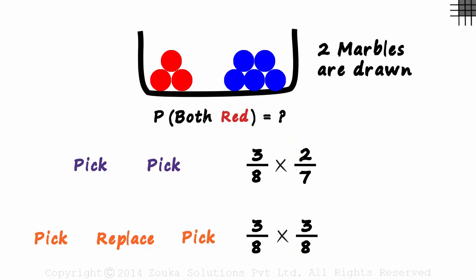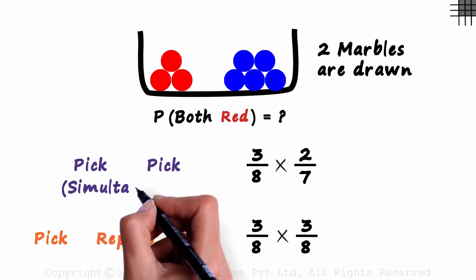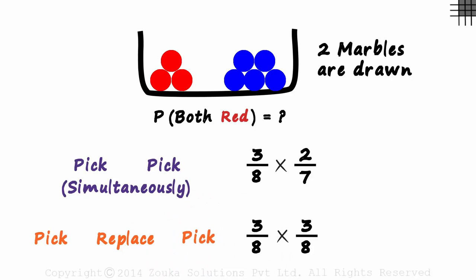Now some of you might be wondering about the third case, of picking two marbles simultaneously. Just think about it for a moment. Won't it be the same as the first case? Pick and pick without replacement? Picking two marbles simultaneously might look different from picking two marbles one after the other, but the outcome will be the same. This will be the probability for both. So we can write simultaneously under pick and pick. They are essentially the same.